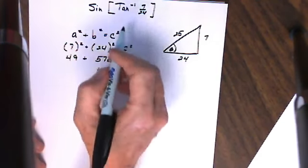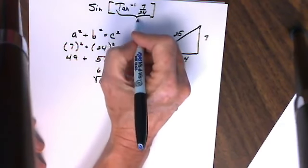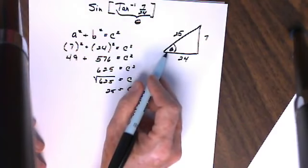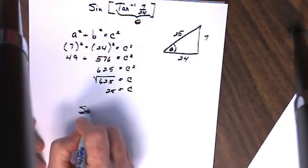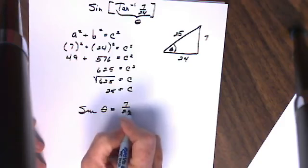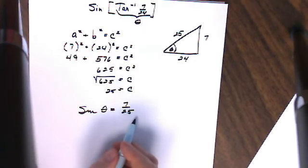Now if I take the sine of this and I know the answer to an inverse trigonometric function is an angle, if I take the sine of that same angle I'm going to compare the opposite side to the hypotenuse. So the sine of angle theta is going to be 7/25 and I'm done. That is the answer to the problem 7/25.